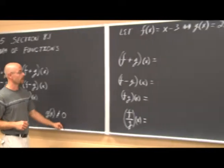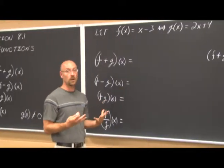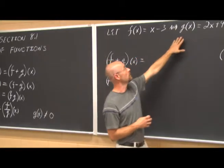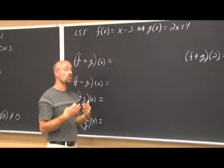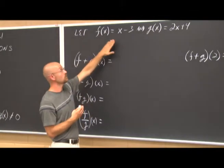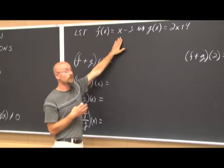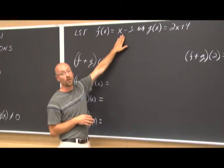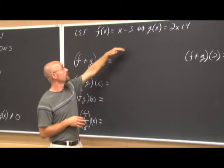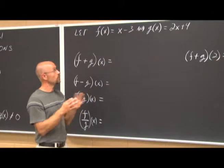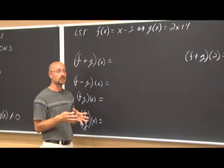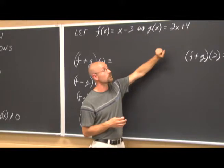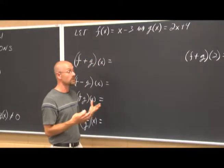Let's look at an example. We have f of x equals x minus 3, and g of x equals 2x plus 4. The first thing I want to assess is the domain. We recognize both as linear equations — x minus 3 is linear, so there are no domain restrictions, no division by zero, no square roots. They're both linear equations, so their domains are all real numbers.